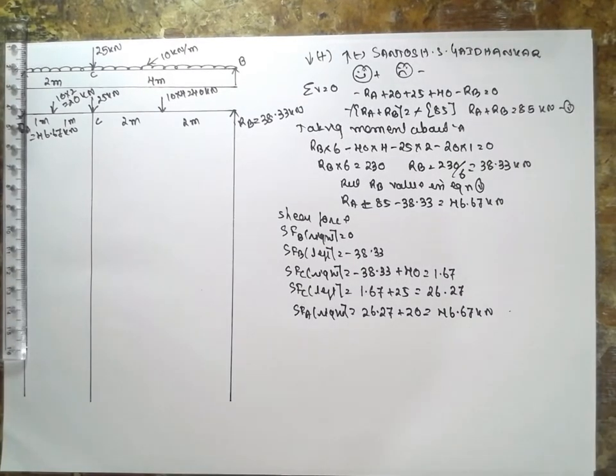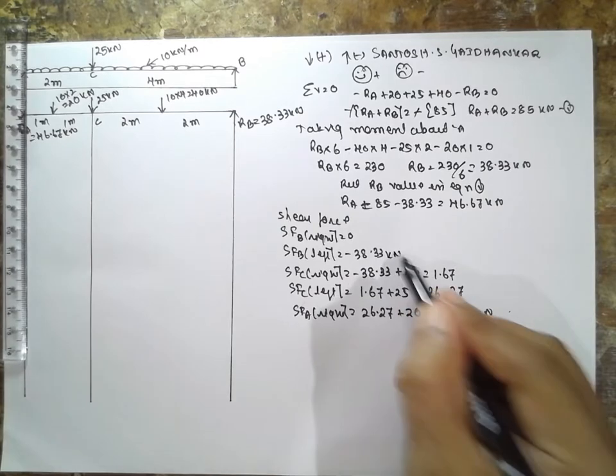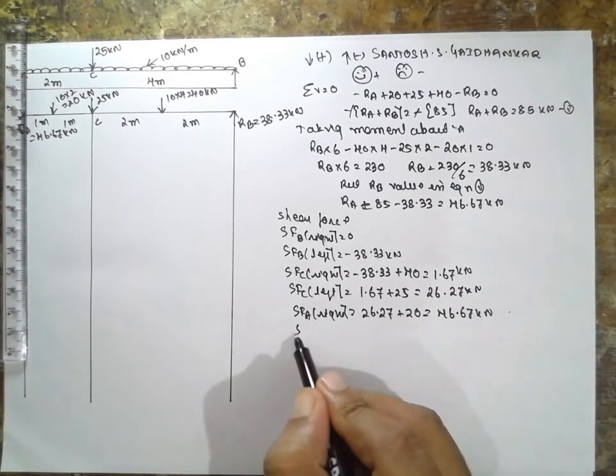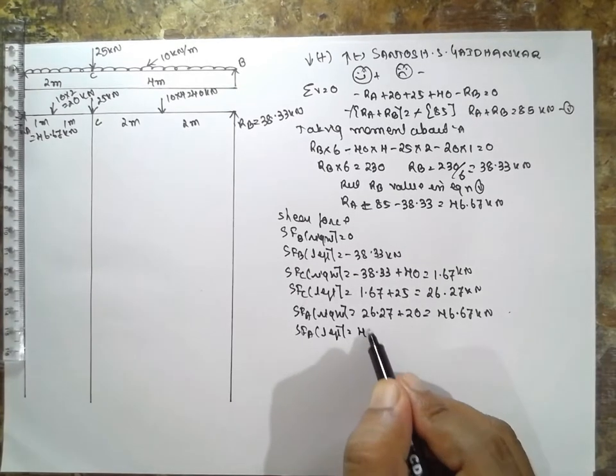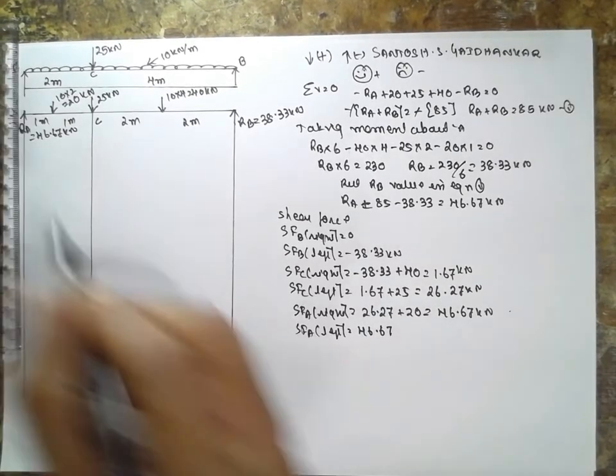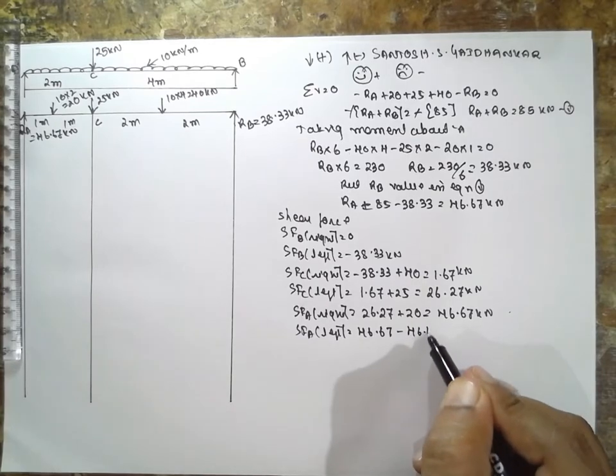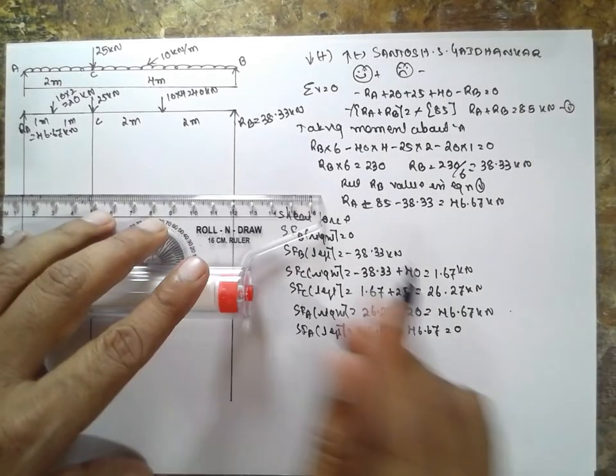Everything is kilonewton here. SFA at left, 46.67 minus 46.67 is nothing but 0.